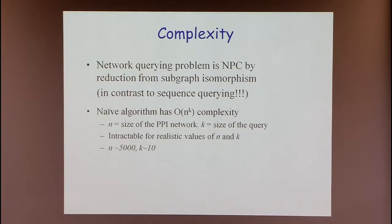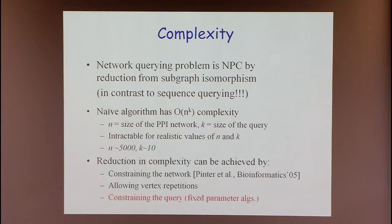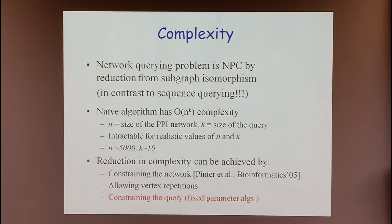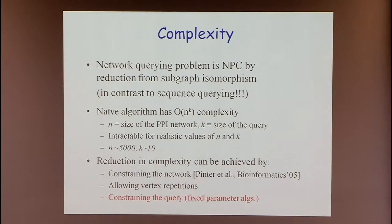You can reduce complexity in three scenarios: for constrained networks such as forests or trees, polynomial algorithms exist. A work by the lab of Ron Pinter considers only tree or forest networks and derives polynomial querying algorithms. Another way is to allow repetitions of vertices in the matched instance. Most interestingly, we can derive fixed-parameter algorithms running in time polynomial in the size of the network but exponential in the query size, which is typically small — say between 10 and 20 proteins.